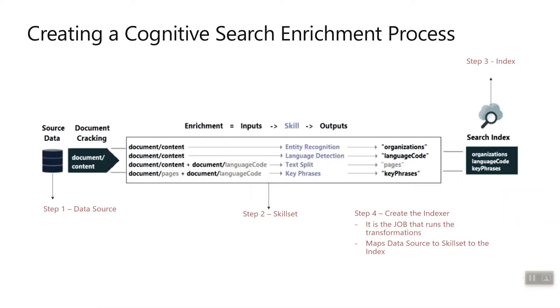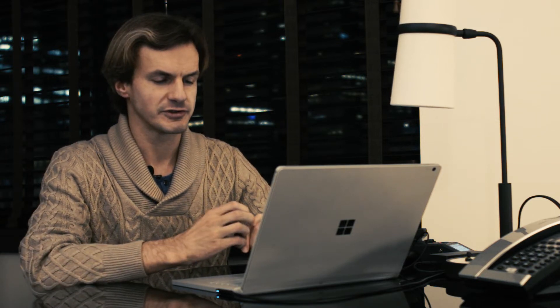This slide describes an example of the hands-on workshop, and I will provide links below so you can do this workshop yourself. The idea is that on the first step you describe the data source — blob storage in our case — then you create a skill set with additional fields like organization, language code, pages, and key phrases. From these documents you create additional fields, then a search index on top of those fields, and then an indexer, which creates jobs to run the transformation and maps the data source to the skill set to the index.